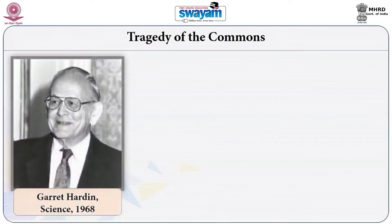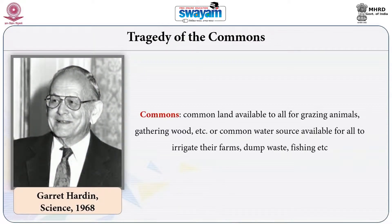The idea of the tragedy of the commons has been widely used and was quite powerful and influential in terms of shaping policies around natural resource governance in different countries of the world. This notion gained popularity after publication of a scientific paper in the journal Science written by Garrett Hardin, by the same name, 'Tragedy of the Commons,' in 1968.